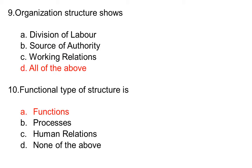Organization structure shows: option A division of labor, option B source of authority, option C working relation, option D all of the above. The correct answer is option D, all of the above.